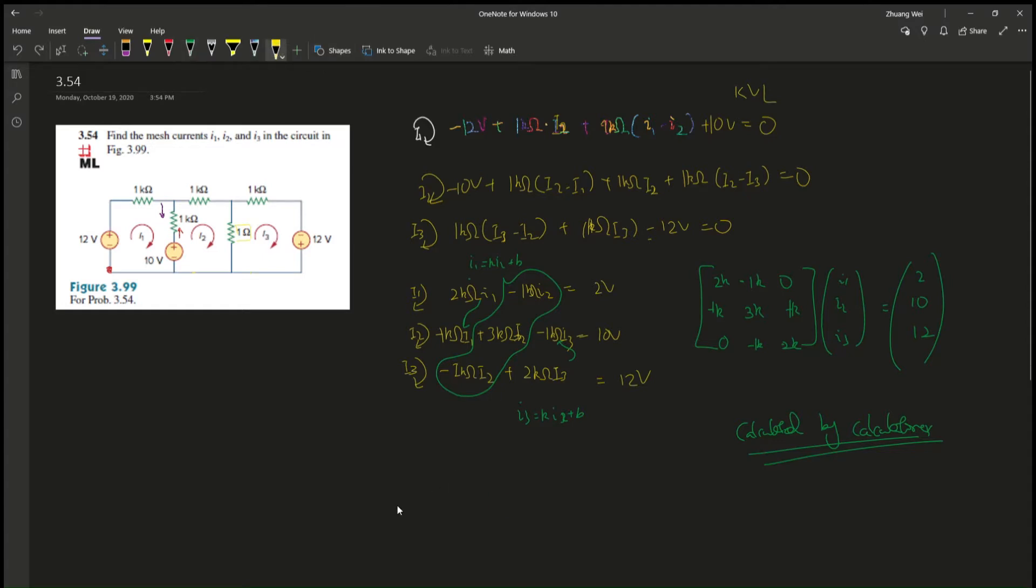So i1 is 2.25 milliamps. Remember, because it's k-ohm and voltage, so it's milliamps, right? If it's just ohms and volts, it's ampere. So i2 is 8.5 milliamps, and then i3 is 1.025 milliamps. Okay, and that is the final answer for this question.